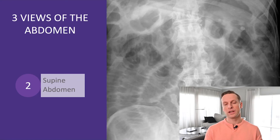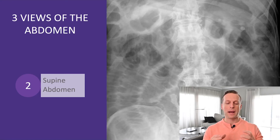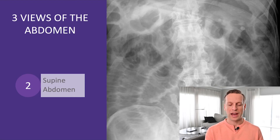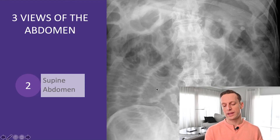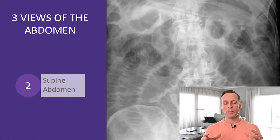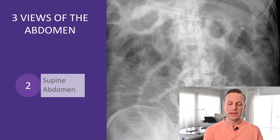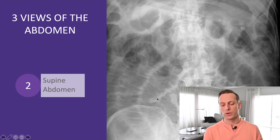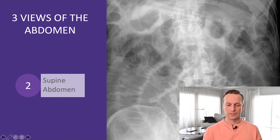The next image is the supine abdomen, and really what it's telling us is mostly bowel distention. Here you can actually see how large the small bowel is — you'll see large gas-filled small bowel right up in the midline when you're dealing with a bowel obstruction.